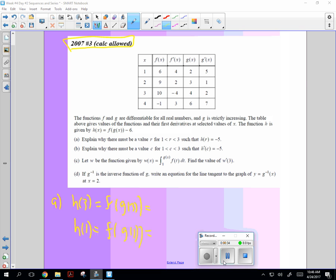So this one, you go g of 3, g of 3 is 4, and then f of 4 is negative 1. And then f of g of 1, g of 1 is 2, f of 2 is 9. In the formula though, they're subtracting 6 each time. So this h of r needs to be somewhere between negative 7 and 3. And is negative 5 between there? Yep. So we won that round.